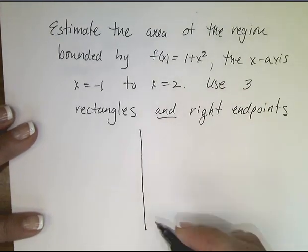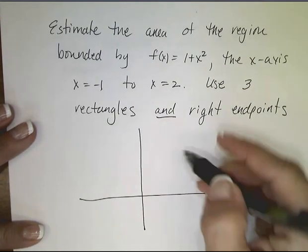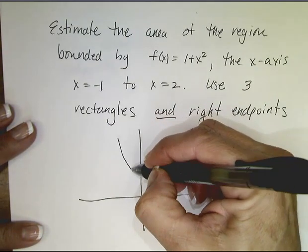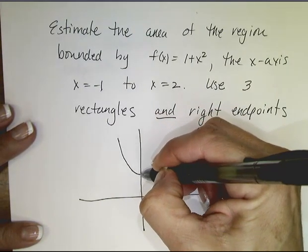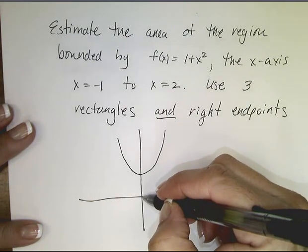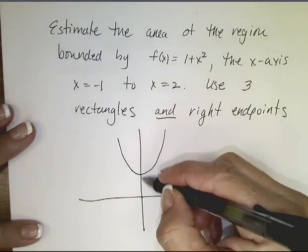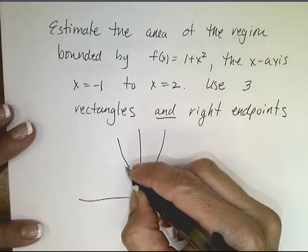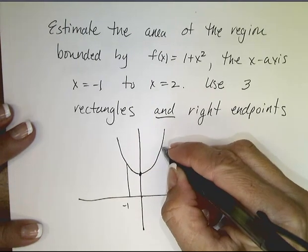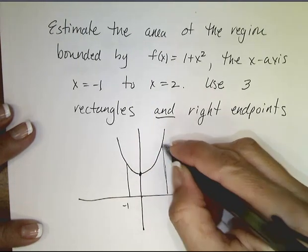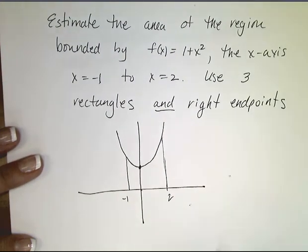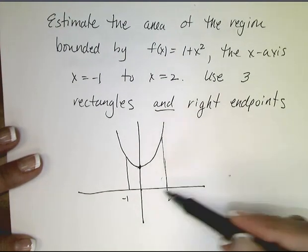As before, we should sketch the region that's being described. So it's our parabola — f(x) = x² shifted up by 1 — and it's bounded from -1 to 2. And I want the area of this region right in here.